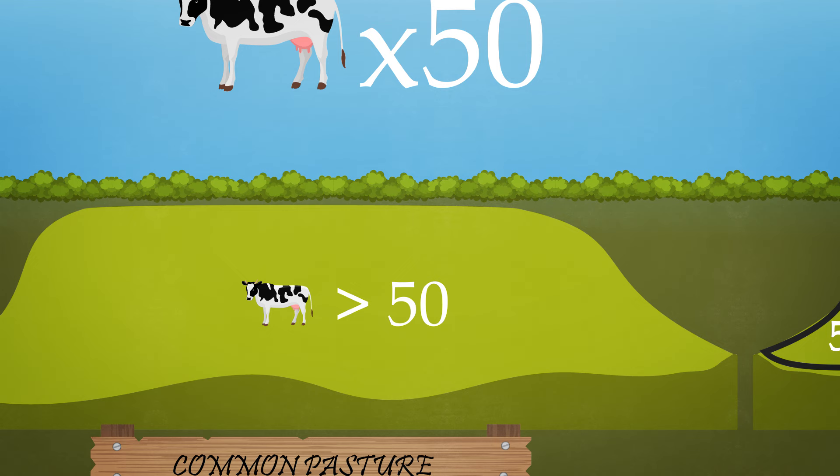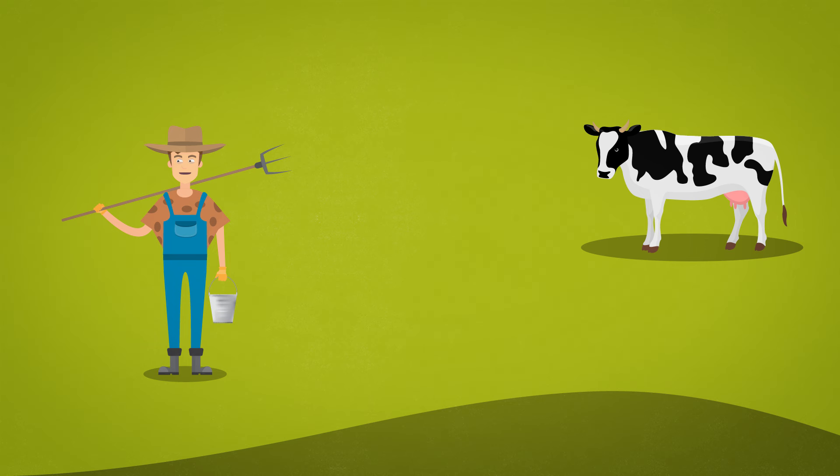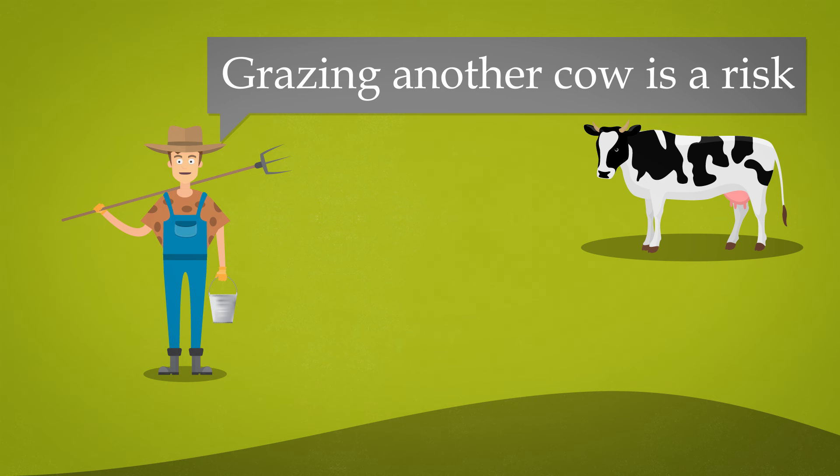One of the commoners called Gilbert thought to himself: so far each of us has been grazing five cows upon the pasture, but now I have more cattle. Grazing another cow is a risk, because the pasture could turn barren. I should not do it then. Unfortunately, the commoners were influenced by different incentives than those affecting private lot owners. Gilbert was worried: